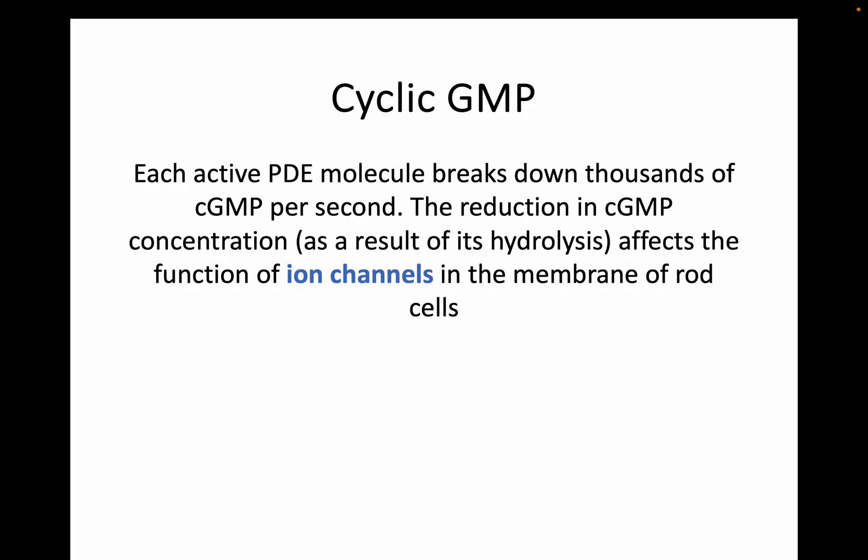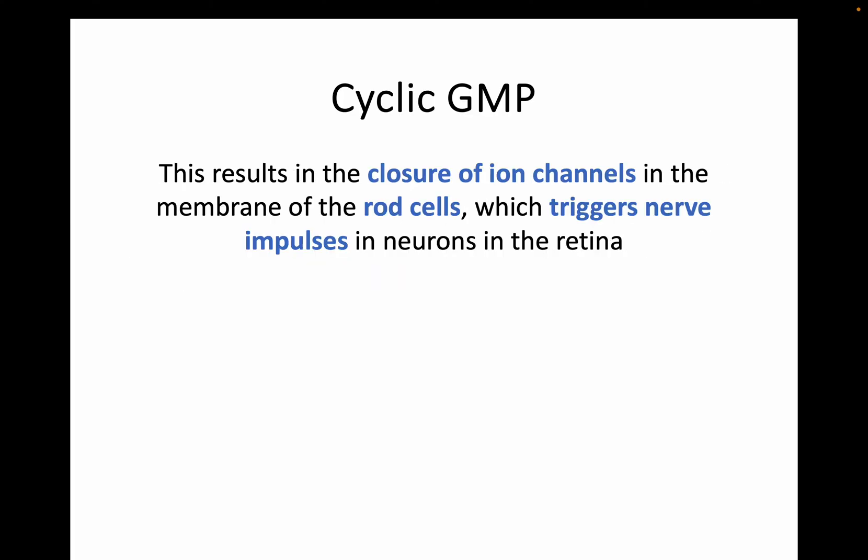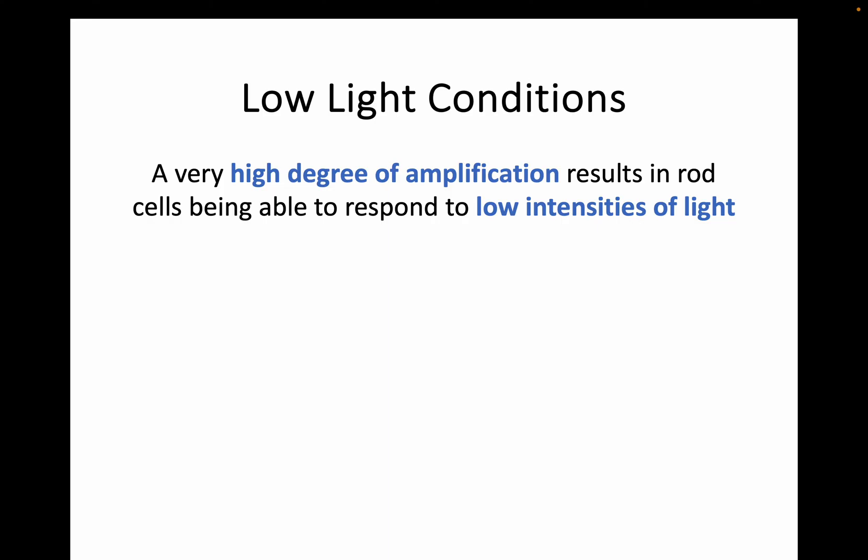That reduction in cyclic GMP — because it's all being hydrolysed — affects the function of ion channels, which has been the main theme of this key area. Those ion channels are found in the membrane of these rod cells. There will then be a closure of those ion channels, which is going to trigger nerve impulses, linking back to part one of this key area. This whole process — the photon of light, the photoexcited rhodopsin, and all the impacts further on — essentially just leads to the closure of ion channels, which triggers a nerve impulse in the neurons in the retina. And this is why rod cells are able to respond to low light intensities: because of that huge amplification from just one stimulus.